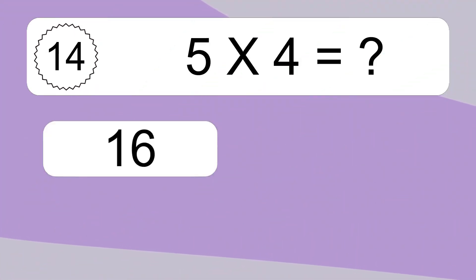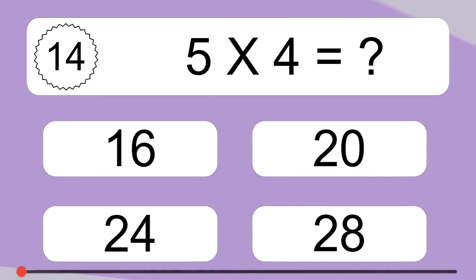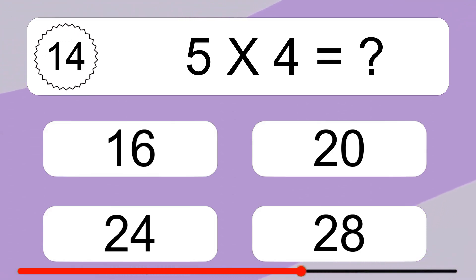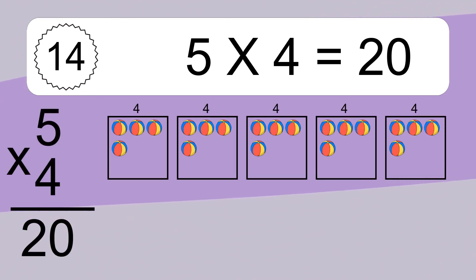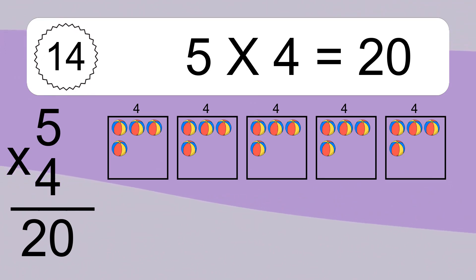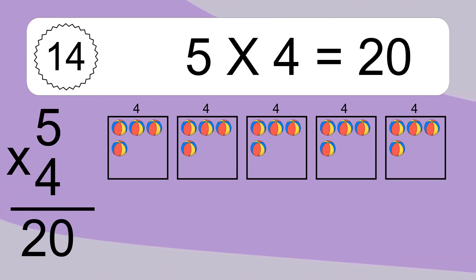5 times 4 equals what? 5 times 4 equals 20. We have 5 boxes and each box has 4 colorful balls inside. If you count all the balls in all the boxes together, you will have 5 times 4 balls. This equals 20 balls.